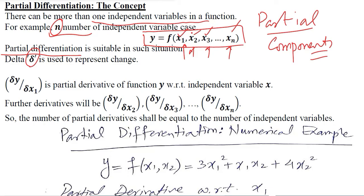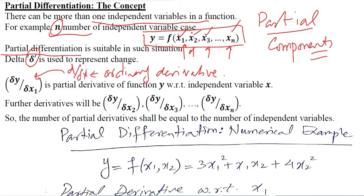We use delta instead of d, because if we use d over dx, it is not going to tell us the distinction between the ordinary derivative that we have been using and the partial derivative. Using delta enables us to specify the partial derivative in a clearly different way.